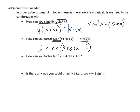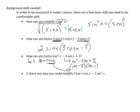The third skill: how can you factor tangent squared x minus 4 tangent x plus 3? If it's not immediately clear, let m equal tangent x, and rewrite this as m² minus 4m plus 3. That factors as (m minus 3)(m minus 1). Remembering that m was tangent x, the original expression factors as (tangent x minus 3)(tangent x minus 1).